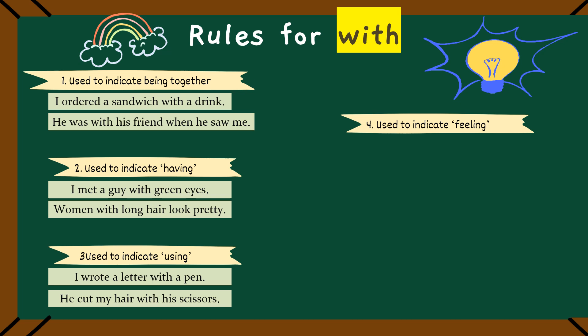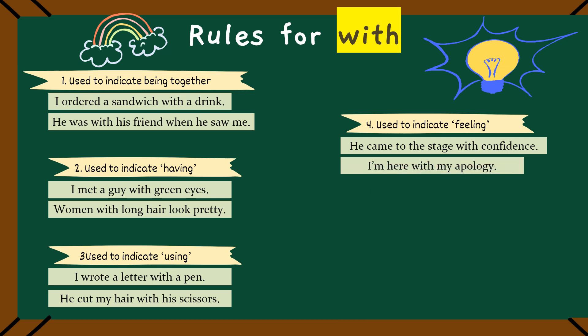Let's move to the next one. With can also show how we feel or the attitude we have. Like, he came to the stage with confidence. This means he wasn't shy. He was feeling brave and very confident. Another one: I am here with my apology. So, when you come with something, it can be a feeling or message. So remember, use with whenever you have to tell about some feeling or some message.